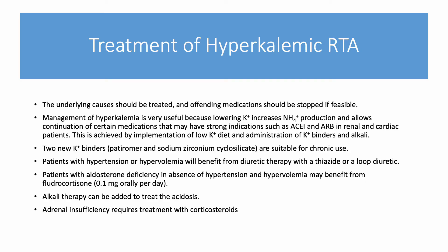To treat hyperkalemic RTA, first treat the underlying cause or stop the offending medication. Manage hyperkalemia with a low potassium diet, potassium binders, and alkali such as sodium bicarbonate. Lowering potassium increases ammonium production, allowing continuation of important medications like ACE inhibitors or ARBs. Two newer potassium binders suitable for chronic use are patiromer (Veltassa) and sodium zirconium cyclosilicate (Lokelma).